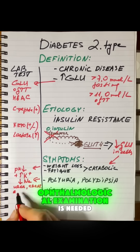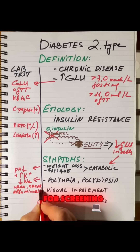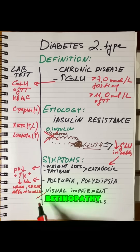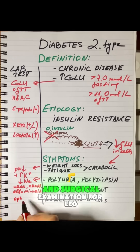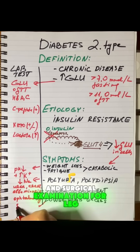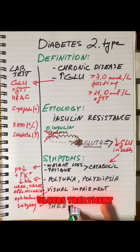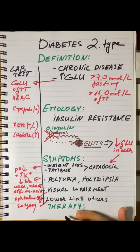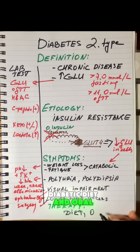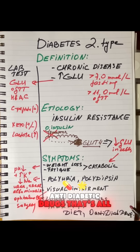Ophthalmological examination is needed for screening retinopathy, and surgical examination is needed for leg ulcers. Treatment consists of a diabetic diet and oral anti-diabetic drugs.